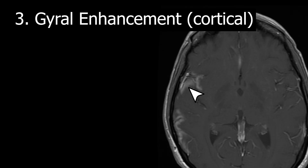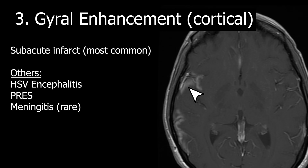Number three is gyral or gyriform enhancement — enhancement in the brain parenchyma along the cortical or gyral surface. This can be seen in a handful of specific entities, but by far the most common is subacute infarct, so that's the one to remember. Others include HSV encephalitis, though it's not the main feature, and PRES, though not characteristic. Know the pattern and that it's most commonly seen with subacute infarct.